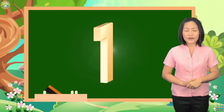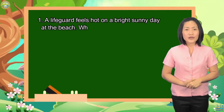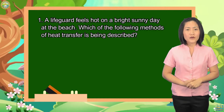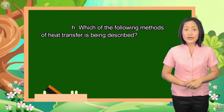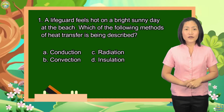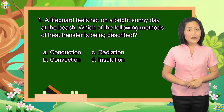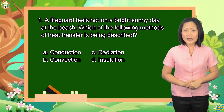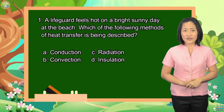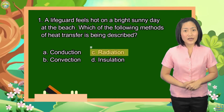Number 1. A lifeguard feels hot on a bright sunny day at the beach. Which of the following methods of heat transfer is being described? A. Conduction. B. Convection. C. Radiation. D. Insulation. The correct answer is letter C, Radiation.